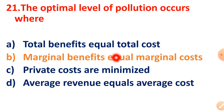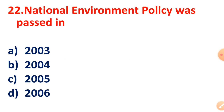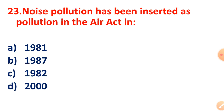At the optimum level of pollution, pollution is not zero — pollution is zero only when output production is zero. Question 22: The National Environment Policy was passed in the year 2006. Question 23: Noise pollution was inserted as pollution in the Air Act in which year? The correct answer is 1981.